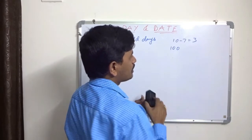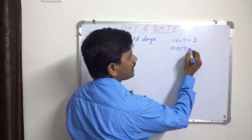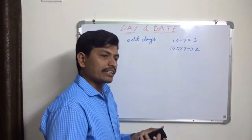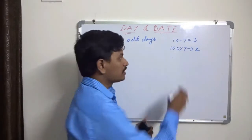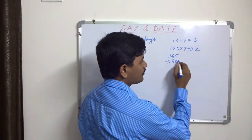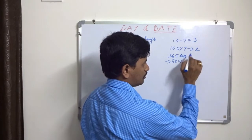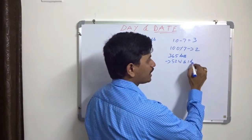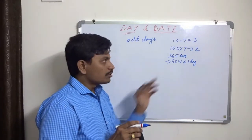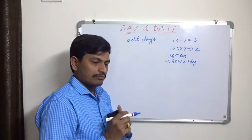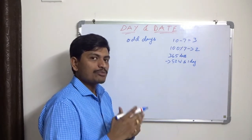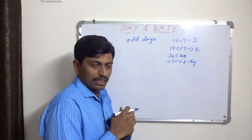Likewise, after one year — a normal year of 365 days, which is 52 weeks and one extra day — if today is Monday, the same day next year will fall on Tuesday. Monday becomes Tuesday, Tuesday becomes Wednesday. For every normal year, one extra odd day will come.